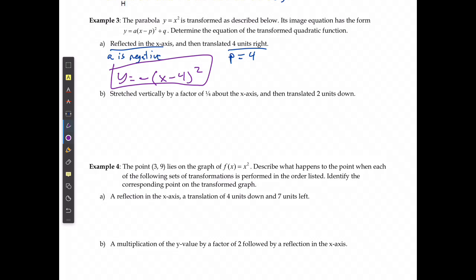For B, it says that it's stretched vertically by a factor of 1/4 about the x-axis. That's my a value. It's translated 2 units down. Vertical translations are my q, and because it's going down, it's going to be negative 2.